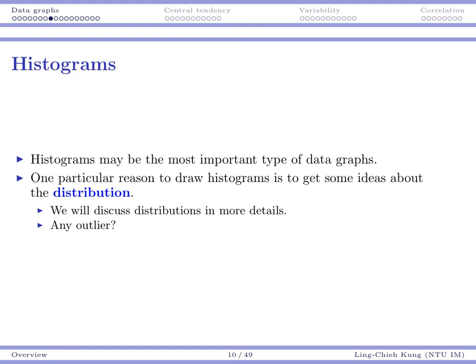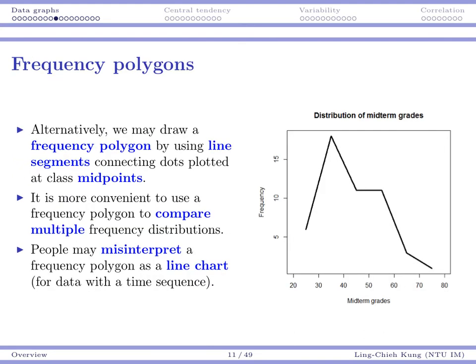Sometimes we may draw lines to connect those class midpoints instead of using several rectangles to depict a distribution. In that case we say we are drawing frequency polygons. One reason for doing that is if we have multiple distributions to compare with each other, then drawing several lines will be better than drawing many rectangles.